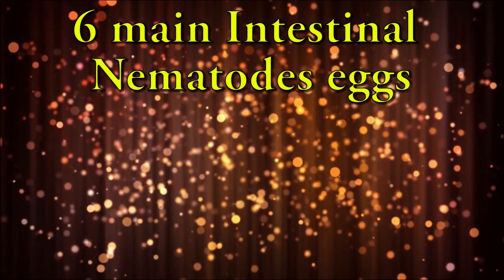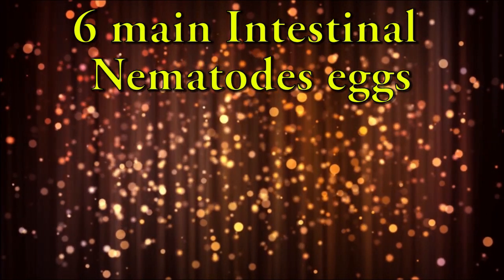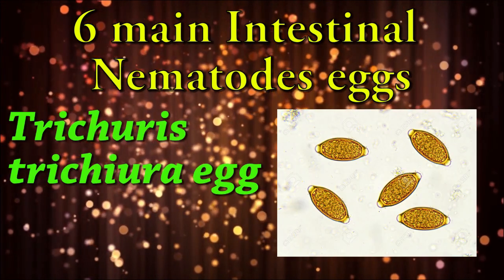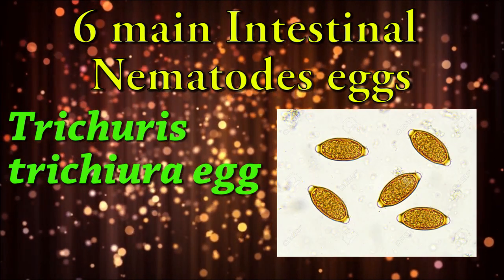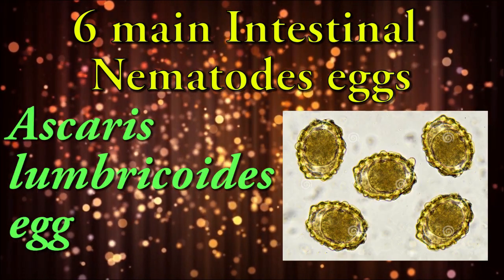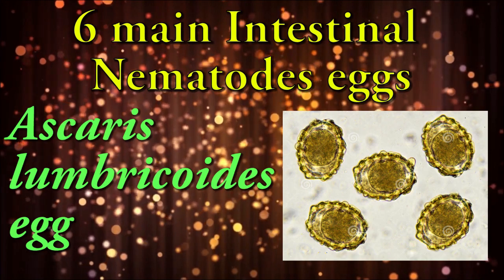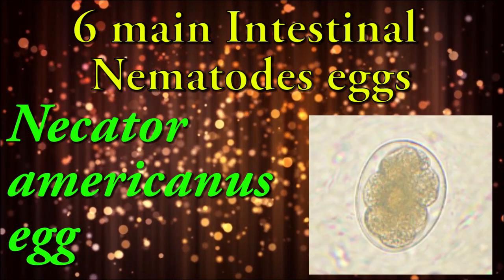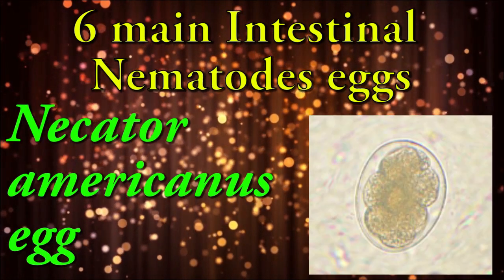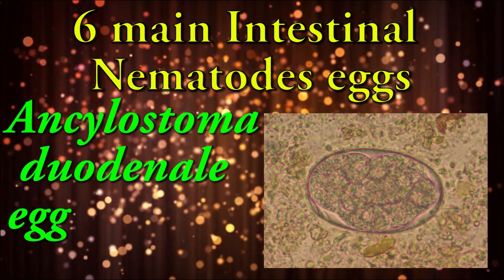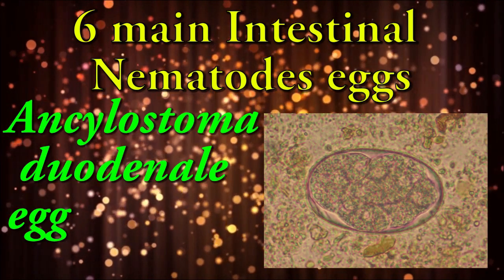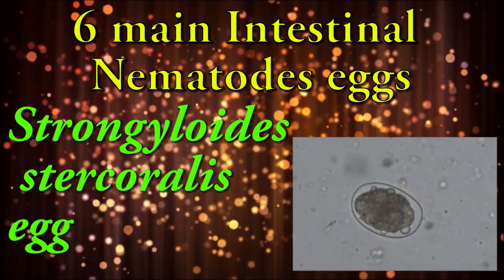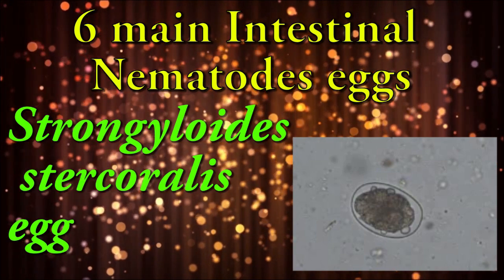There are six main intestinal nematode eggs: Trichuris trichiura egg, Ascaris lumbricoides egg, Enterobius vermicularis egg, Necator americanus egg, Ancylostoma duodenale egg, and Strongyloides stercoralis egg.